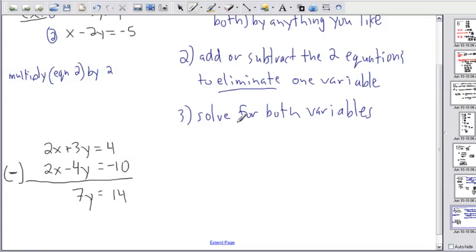Now the last step is just to solve for both variables. I've got one equation now with one unknown. I've got 7y equals 14. What value multiplied by 7 gives you 14? You can always divide by 7. So y equals 14 divided by 7. Therefore y equals 2.